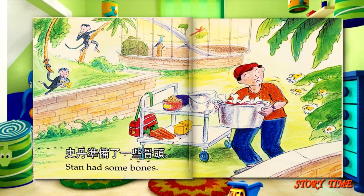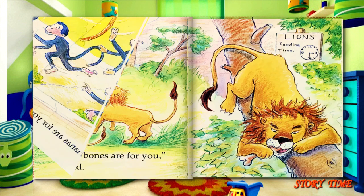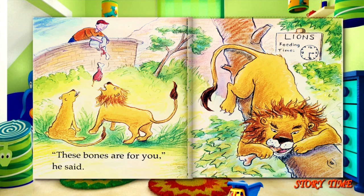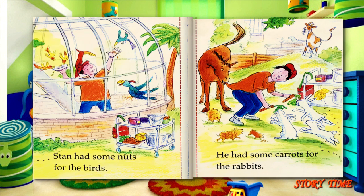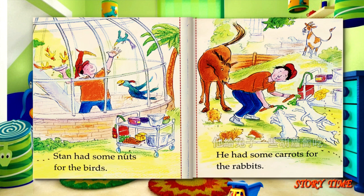Stan had some bones. "These bones are for you," he said. Stan had some nuts for the birds. He had some carrots for the rabbits.